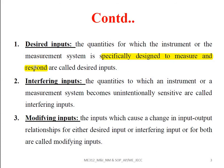The second type is the interfering inputs. These are quantities to which an instrument or measurement system becomes unintentionally sensitive. Due to some other factors, the input quantities are disturbed or externally influenced — for example, by environmental temperature, dust, or other contaminants. What we give as input is slightly changed by some external quantities. This is called interfering inputs.